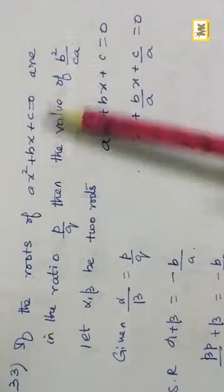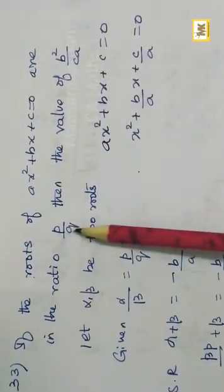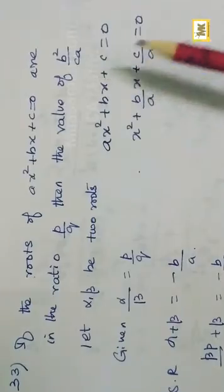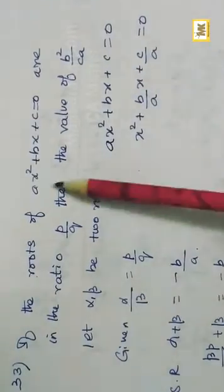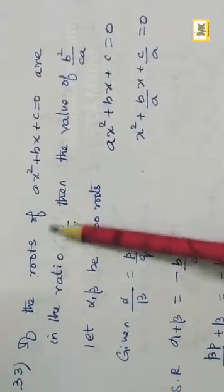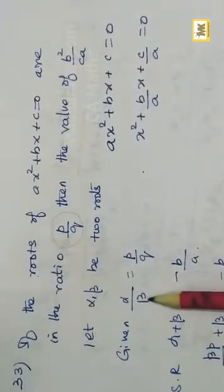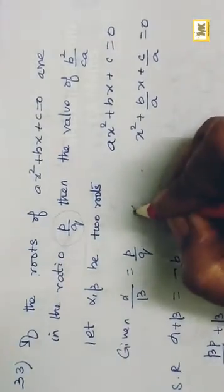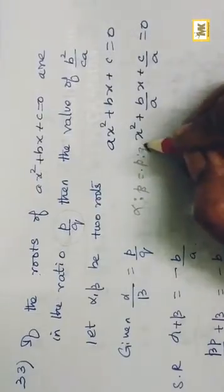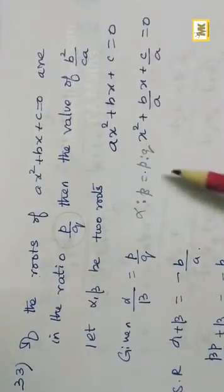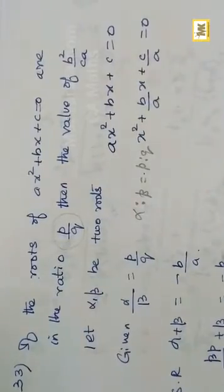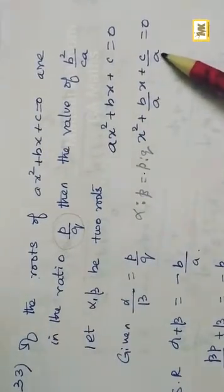Question 33: Roots are in the ratio p:q. Let alpha/beta = p/q. Sum of roots = -b/a and product of roots = c/a. Substituting alpha = (p/q)·beta into sum gives beta·(p+q)/q = -b/a.